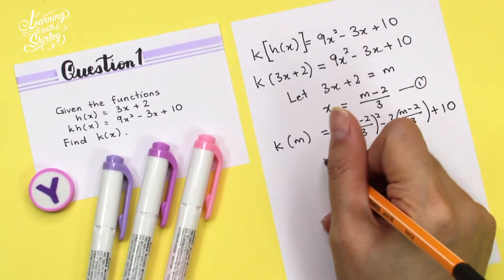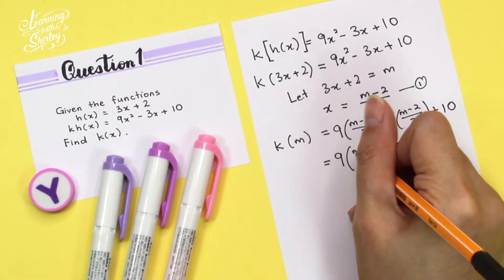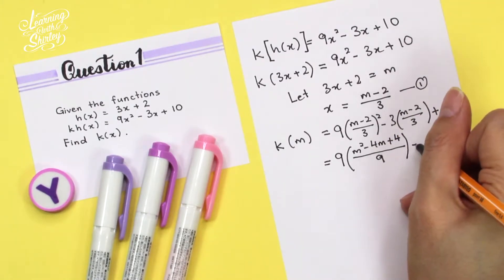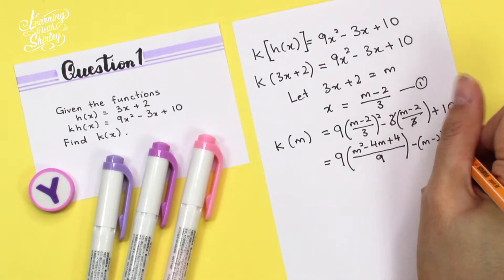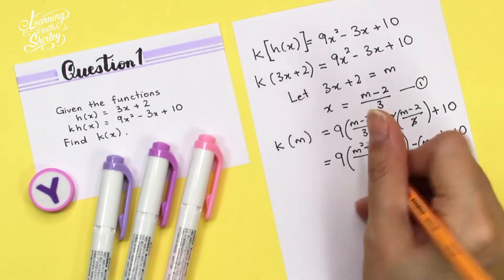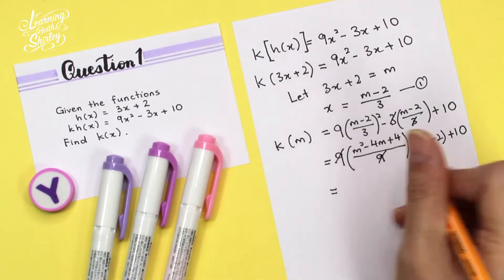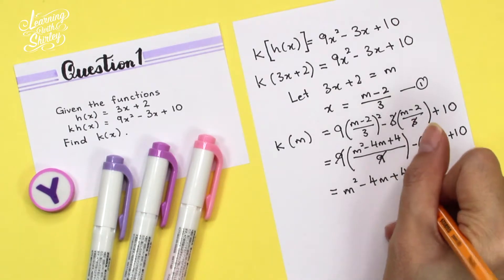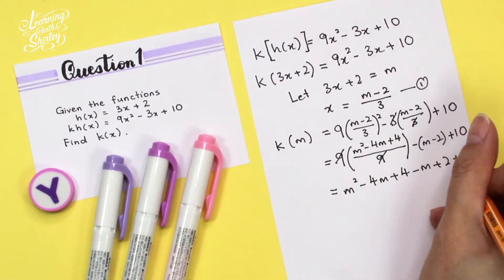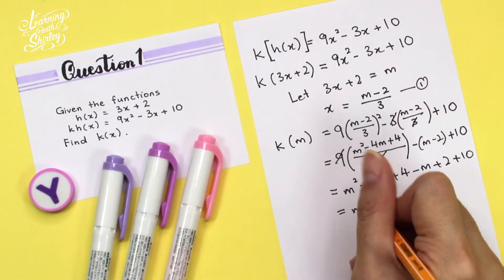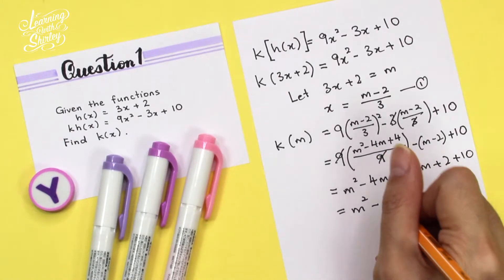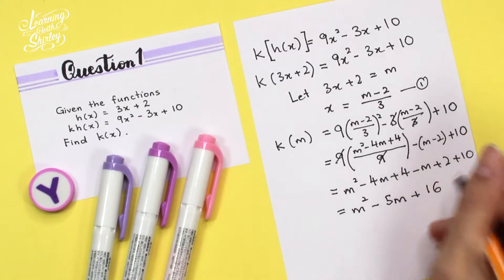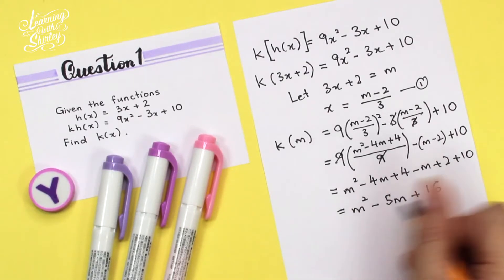Now we expand. We get 9 · (m² - 4m + 4) / 9, then minus (m - 2) + 10. We can cancel the 9s, giving m² - 4m + 4 - m + 2 + 10. Collecting terms: m² - 5m + 16. For the final answer, we change all m back to x, so k(x) = x² - 5x + 16.